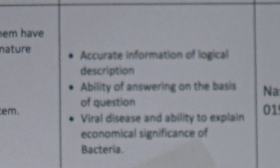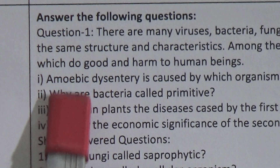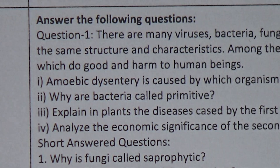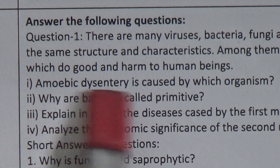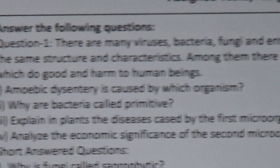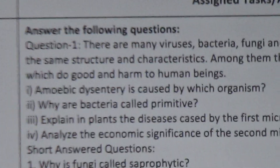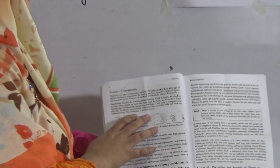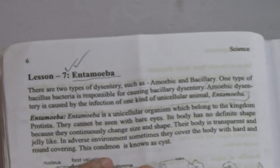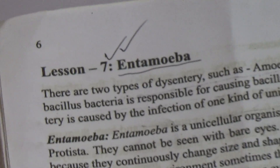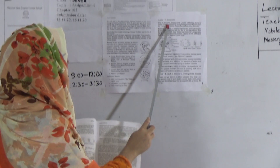Today we will discuss question 1, question 2, and question 3. Question 1 is: amoebic dysentery is caused by which organism? If you open your book at chapter 1, page number 6, you can find the answer there. For doing this assignment you have to read the chapter very carefully and you will find all the answers. Lesson 7 is named Entamoeba.